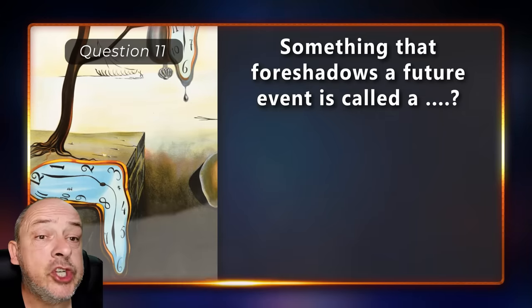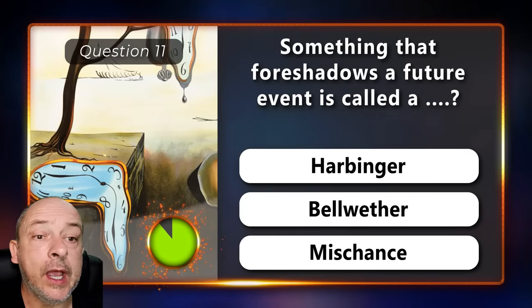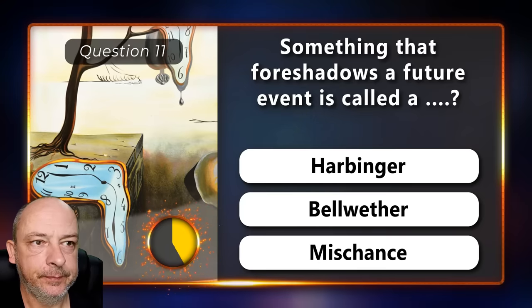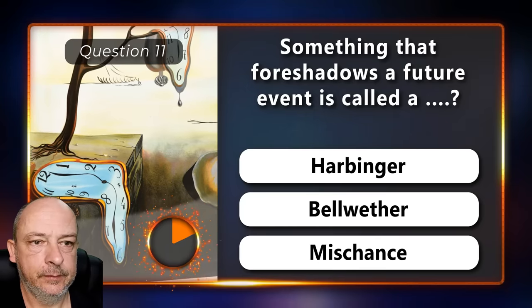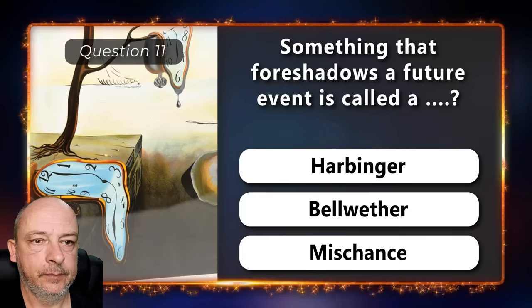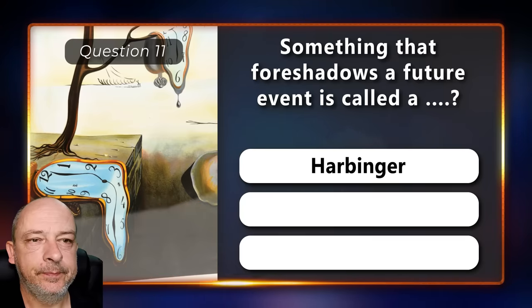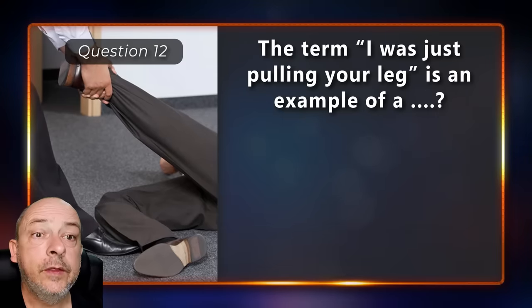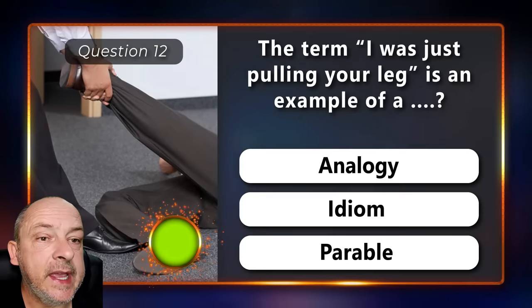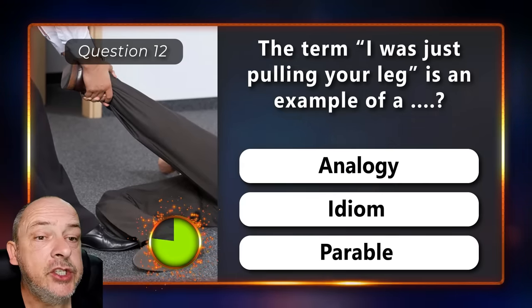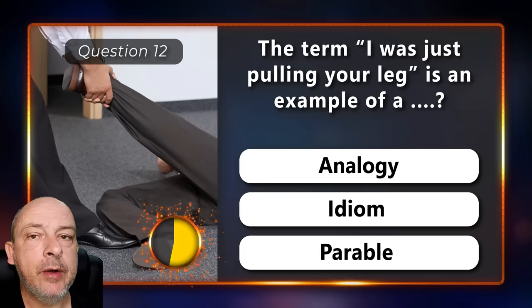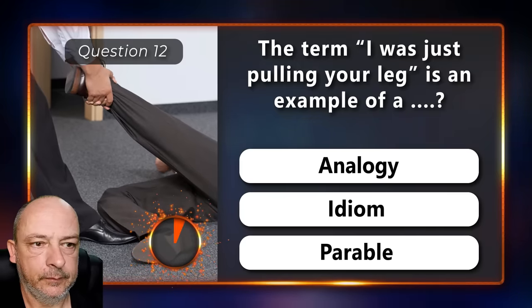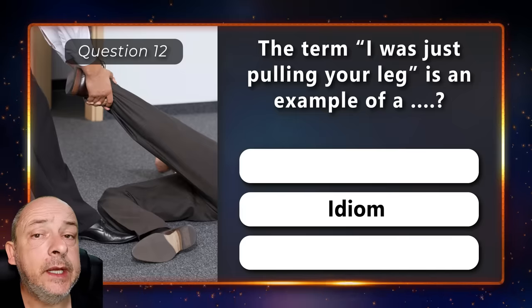Something that foreshadows a future event is called a harbinger, a bellwether, or a mischance? It is a harbinger. The term 'I was just pulling your leg' is an example of an analogy, an idiom, or a parable? It's an idiom.